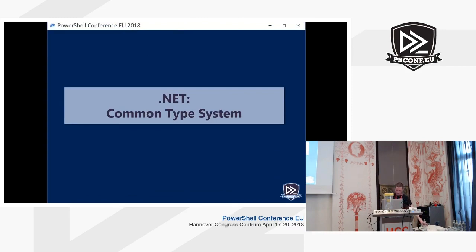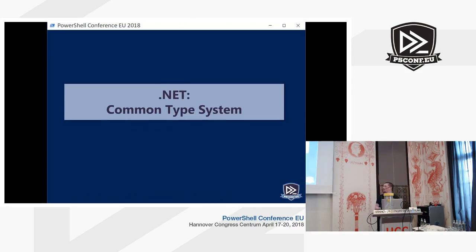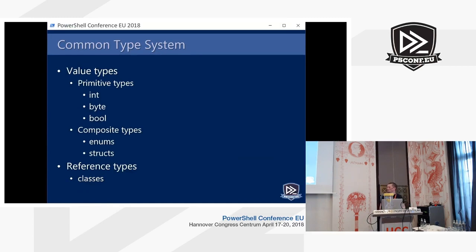Back to the .NET type system. The common type system has two kinds of types. We have something called value types, sometimes broken into primitive types and composite types. The primitive types are built into the type system itself — we have numerical types like integers (16-bit, 32-bit, 64-bit), a byte type representing a single byte, and a boolean that can represent a true/false value. Then we have composite types like enums and structs.